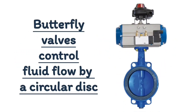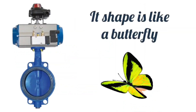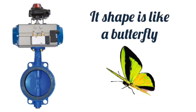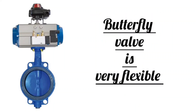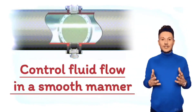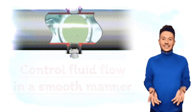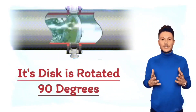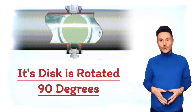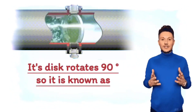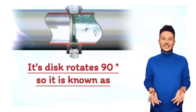The second type is the butterfly valve. Butterfly valves control fluid flow from a circular disc. Its shape is like a butterfly, hence the name butterfly valve. Butterfly valves are very flexible and control fluid flow in a smooth and precise manner. Its disc is rotated 90 degrees, which is used to control or regulate the fluid flow. Because its disc rotates 90 degrees, it is also called a quarter-turn valve.